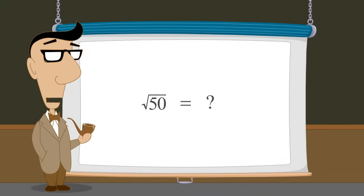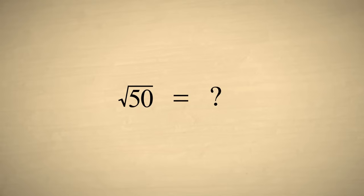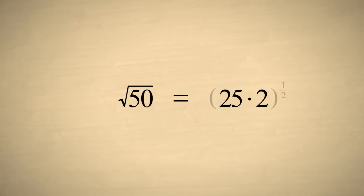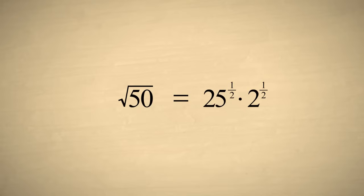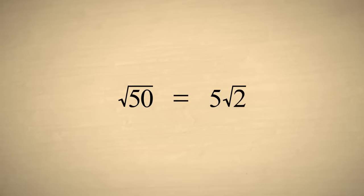But there is another way we can represent this radical expression, which is still exact but maybe even easier to work with. Notice that we can factor the number under the radical sign as 25 times 2. Instead of using a radical sign, let's write this using exponents. We can distribute the exponent to each term, taking the square root of each term separately. So the square root of 50 equals the square root of 25 times the square root of 2, or 5 times the square root of 2.